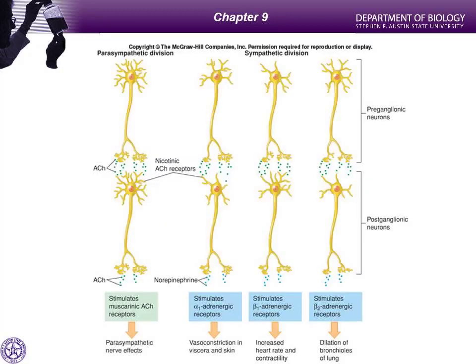Here we finish our illustration — preganglionics with cholinergic receptors, a cholinergic postganglionic in the sympathetic system, and adrenergic neurons with norepinephrine associated with alpha-1, beta-1, and beta-2. Alpha-2 is left out of the illustration. A seminar speaker noted that additional numbered receptors — alpha-3s and beta-3s — have been identified in other tissues but simply haven't made it into the textbooks yet.